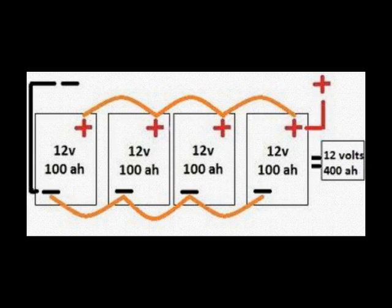As you can see in this diagram, we have four 12 volt 100 amp hour batteries. By connecting them in parallel — positive to positive and negative to negative throughout the system — you'll increase the battery size to 400 amp hours, but it will retain the 12 volt system. This is what you'll need to do if you want to increase the run time when using a 12 volt DC to AC power inverter.